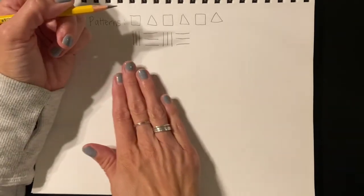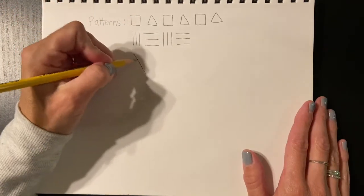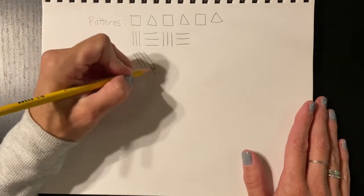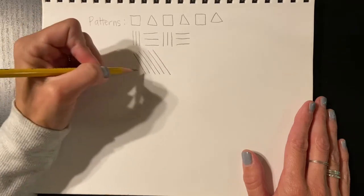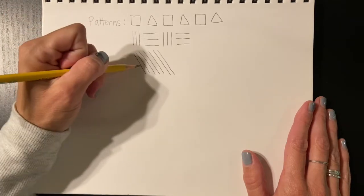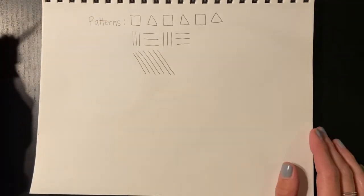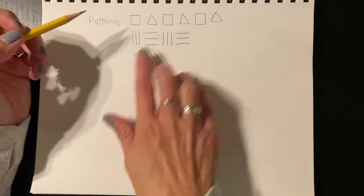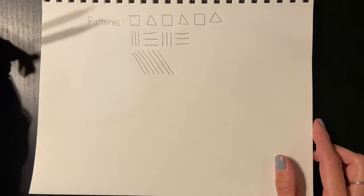So I could do a whole bunch of maybe diagonal lines to create a design, and then you could use color to make a pattern in here if you wanted to. I could do something like red, blue, red, blue, red, blue, and that would be a pattern using colors.